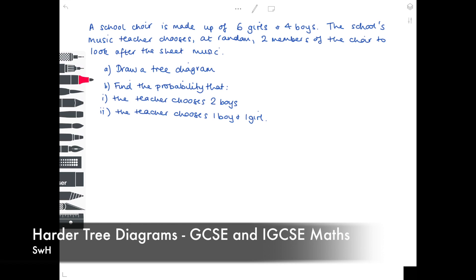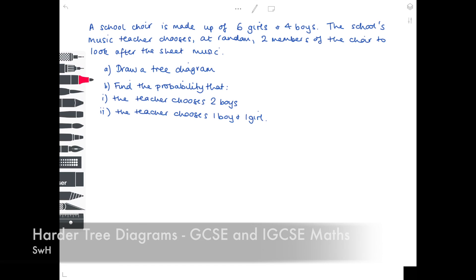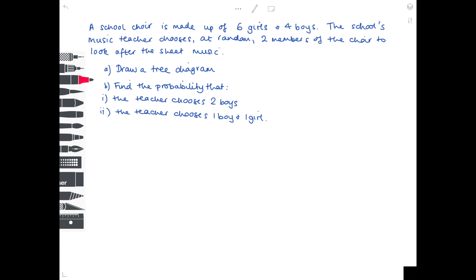Hi guys, Leslie's back with another video looking at slightly more difficult tree diagrams. Sometimes the probabilities on the branches are affected by what happens in the first game, match, choice, whatever. So we're going to look at one where the probabilities aren't the same all the way through.